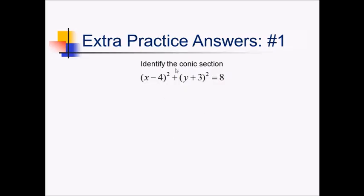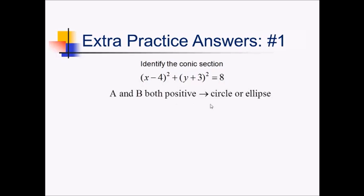For this problem, trying to identify this conic section. Since A and B are both the same sign and they're both squared, that tells me this is either going to be a circle or an ellipse. And if I were to expand these out, I would see that I had one x squared and one y squared. A and B are the same number, so since A equals B, that's going to be a circle.